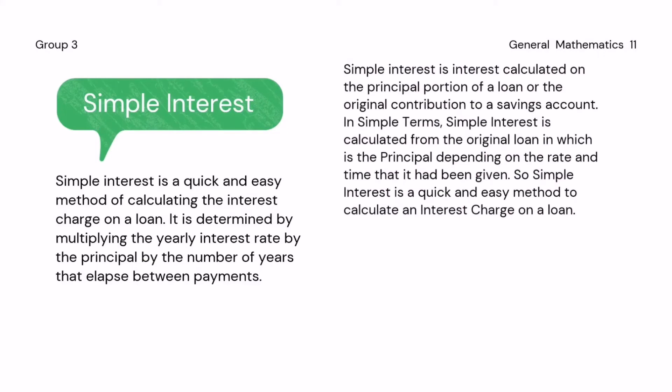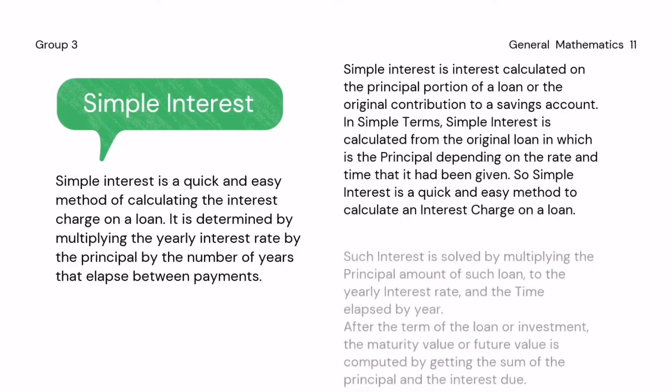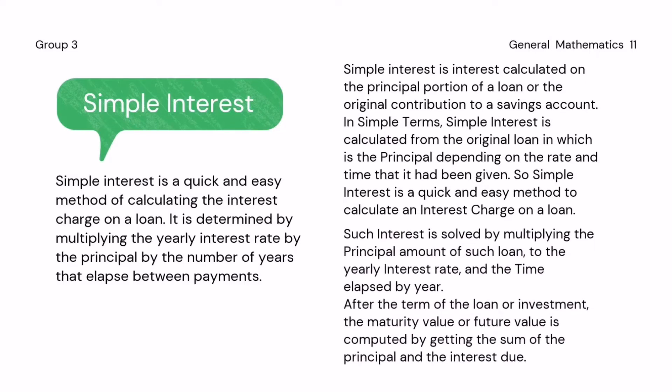Simple interest is interest calculated on the principal portion of a loan or the original contribution to a savings account. In simple terms, simple interest is calculated from the original loan — the principal — depending on the rate and the time that it had been given. Such interest is solved by multiplying the principal amount by the yearly interest rate and the time elapsed by year. After the term of the loan or investment, the maturity value or future value is computed by getting the sum of the principal and the interest due.